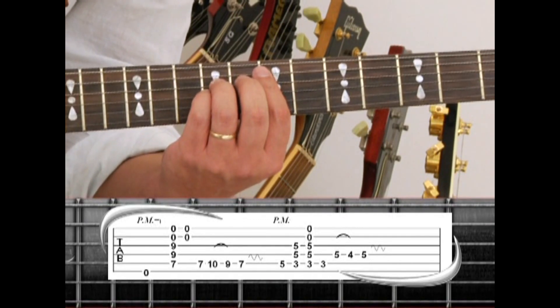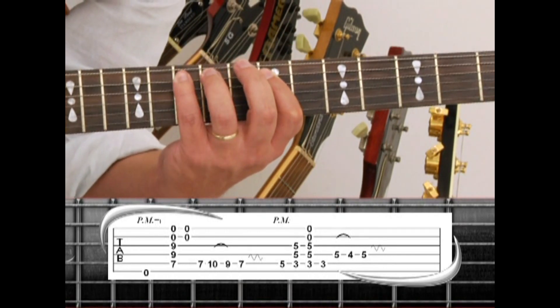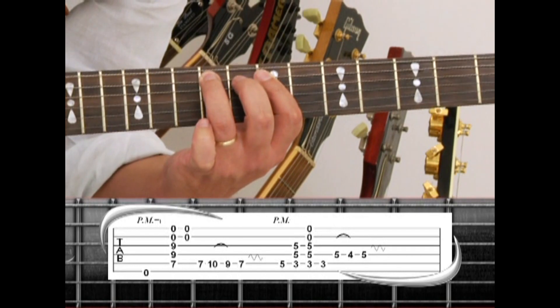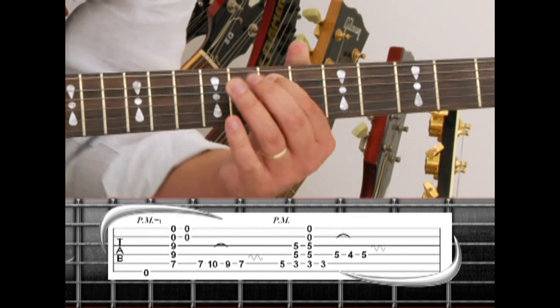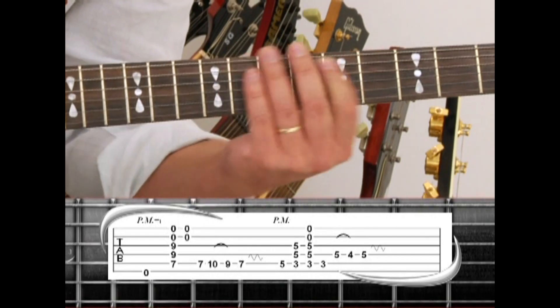Followed by a riff on the 5th string 7 with the index. 10 with the pinky. Pull the 9 with the ring. To 7 with vibrato. Down to the 5th fret.